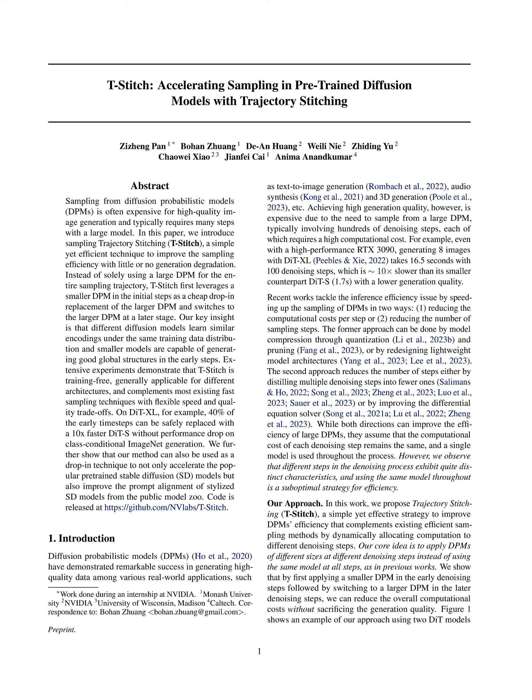Our approach is characterized by the implementation of a pairwise denoiser strategy within the sampling trajectory. Initially, a smaller denoiser is employed for a portion of the total steps, succeeded by a larger denoiser for the remainder. This methodology facilitates a flexible balance between speed and quality, with our experiments demonstrating that a specific configuration can achieve significant improvements in both aspects.